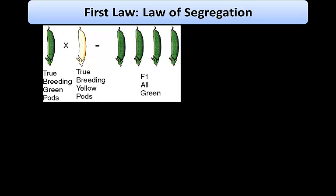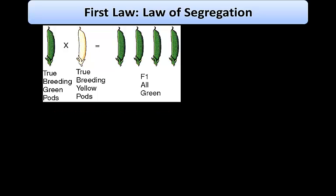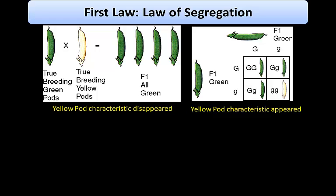The first law of Mendel is the law of segregation. In the case of pod color, Mendel's pea experiment showed that a cross between a green pea pod plant and a yellow pod plant produced only green pod plants in the F1 generation. The yellow pod characteristic had totally disappeared. However, the F2 generation showed a surprising result — the yellow pod variant appeared in one quarter of that generation.